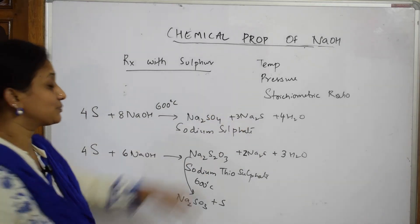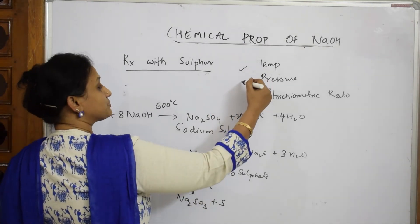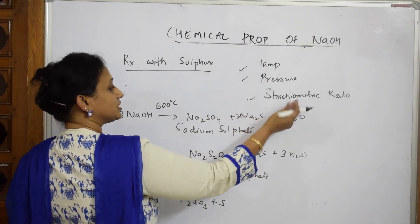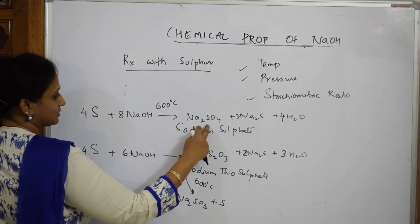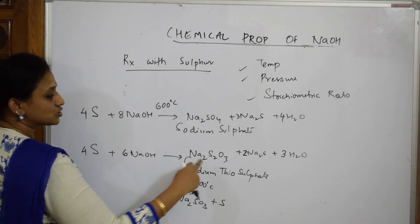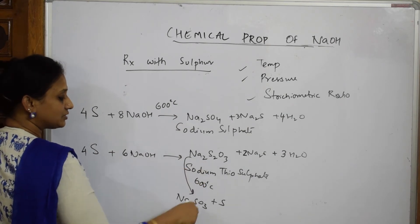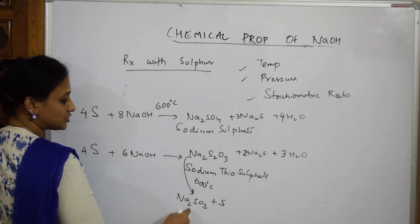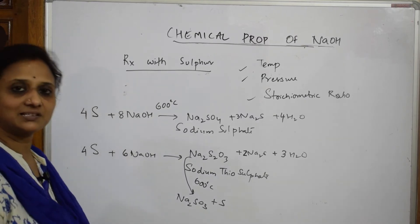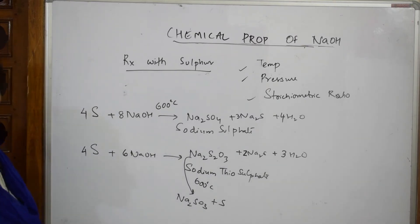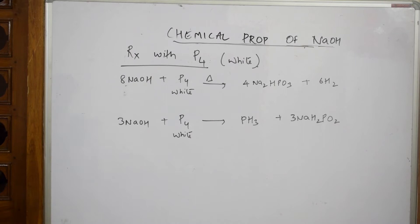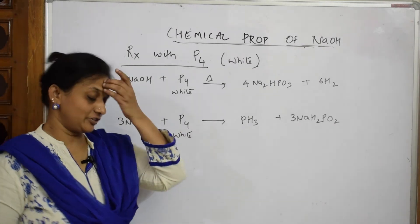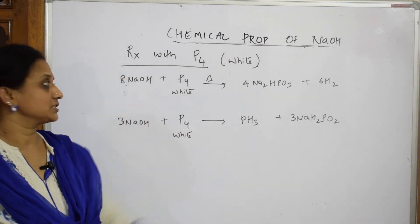These reactions for sulfur depend upon temperature, specific pressure, and stoichiometric ratio. If it is 8 moles, you get sodium sulfate. If it is 6 moles, you get sodium thiosulfate, which further decomposes or converts into sodium sulfite and elemental sulfur. Please note these reactions carefully.